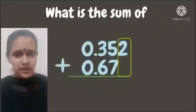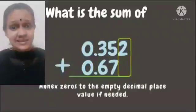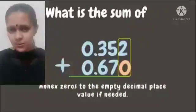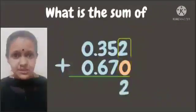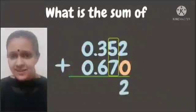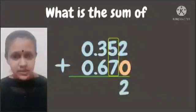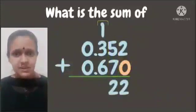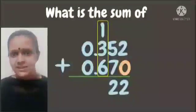Now let's add from right to left. Since there is an empty place value, we put a 0. 2 plus 0 is 2, 5 plus 7 is 12. Write 2, carry 1 to the next place value. Then 1 plus 3 plus 6 is 10.